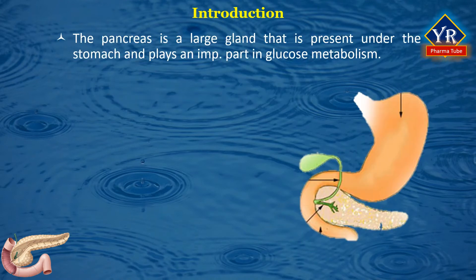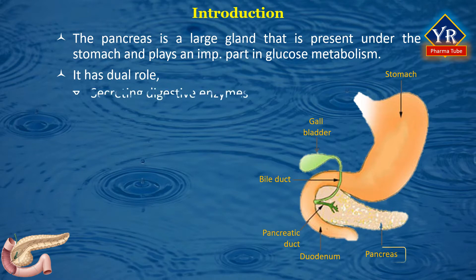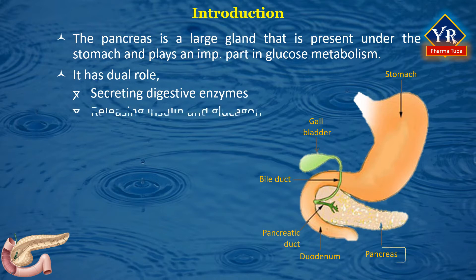The pancreas is a large gland that is present under the stomach and plays an important part in glucose metabolism. It has a dual role: first, secreting both digestive enzymes — pepsin and trypsin — into the duodenum via the pancreatic duct; and second, releasing insulin and glucagon, the key hormones in glucose regulation, into the blood.